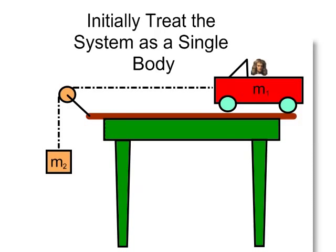Initially, if we treat this system as a single body, it's going to make things a little bit easier, because I can just use my second law, F equals mA, to calculate the acceleration of the system, given the total mass of the system.